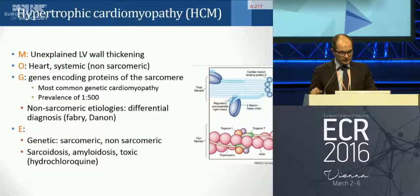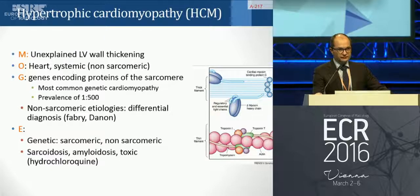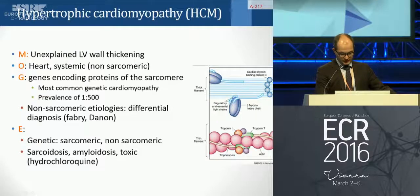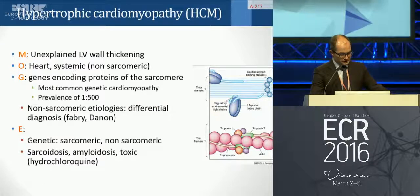Hypertrophic cardiomyopathy is an unexplained LV wall thickening. Usually the heart is involved, but there is also a non-sarcomeric form. Usually it involves genes encoding proteins of the sarcomere. A lot of proteins could be involved and give hypertrophic cardiomyopathy. This is the most common genetic cardiomyopathy.